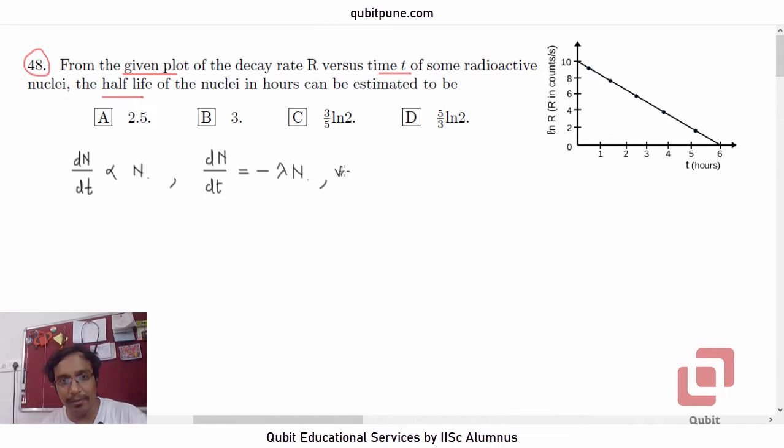So this is our differential equation. It is a variable separable differential equation. The variables N, number of nuclei, and the time t, they can be separated. And if you solve the differential equation with the initial condition that at t equal to 0, there were N naught nuclei, you will get the following solution. The solution is N is equal to N naught e to the power negative lambda t. This is the particular solution.